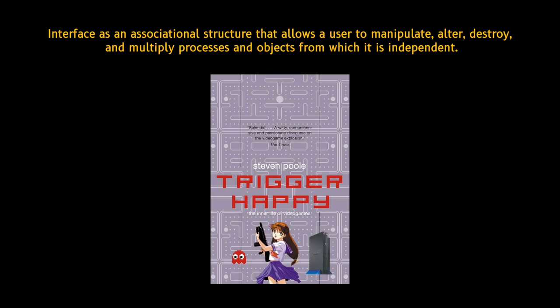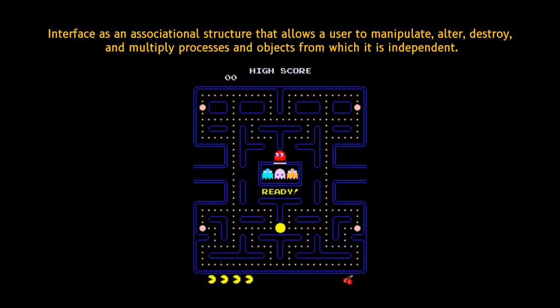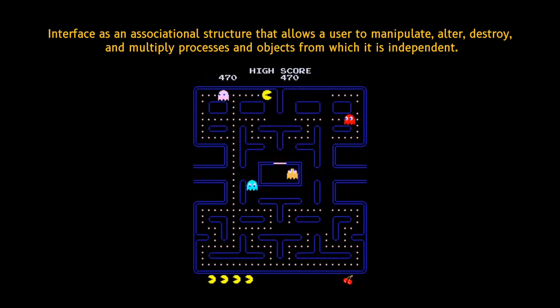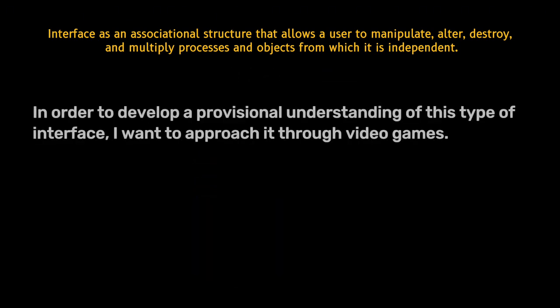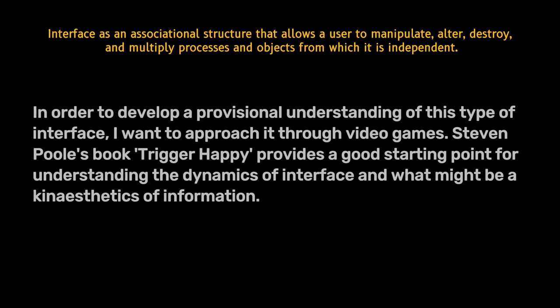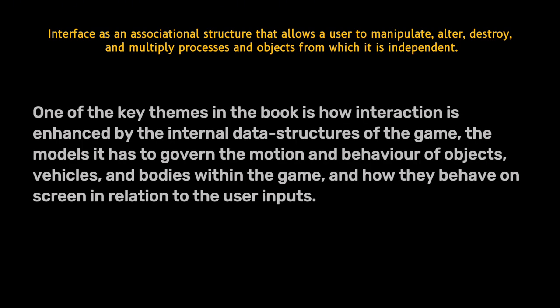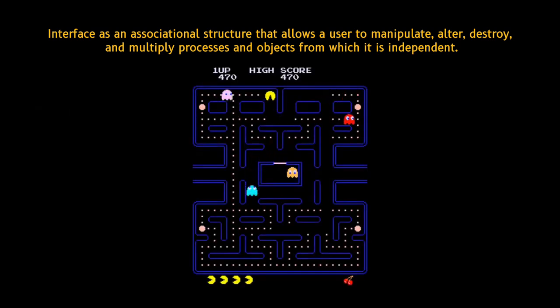Fuller relies on Stephen Poole's book "Trigger Happy" to help explain the relationship between game interfaces and user interaction. Poole's work emphasizes how the internal data structures and mathematical models governing game mechanics — like the behavior of objects and characters — create a rich, interactive experience. One of the key themes in the book is how interaction is enhanced by the internal data structures of the game, the models governing the motion and behavior of objects, vehicles, and bodies within the game, and how they behave on screen in relation to user inputs. Poole argues that realism in games comes from internal consistency rather than absolute authenticity.